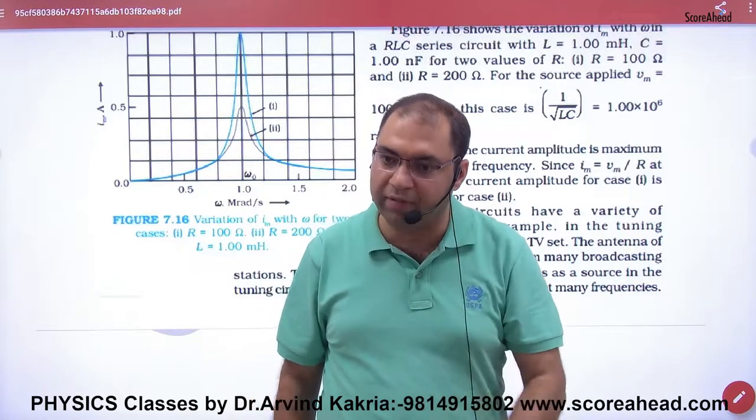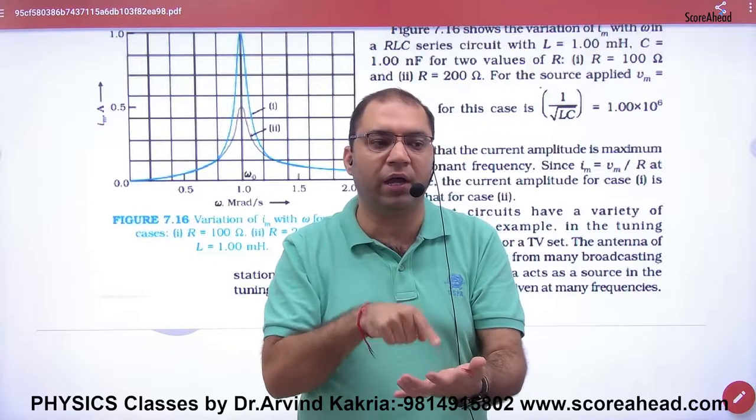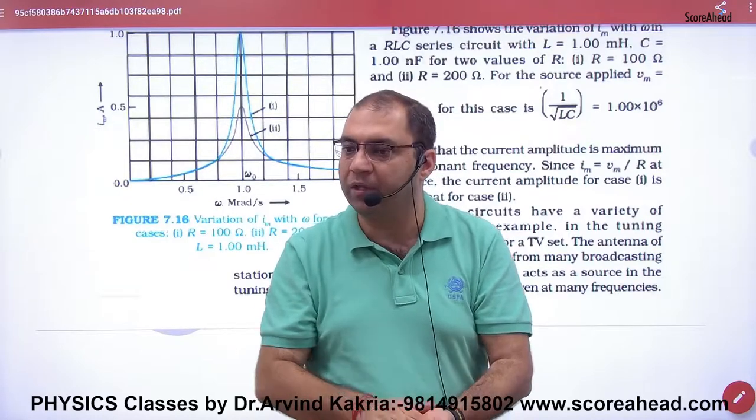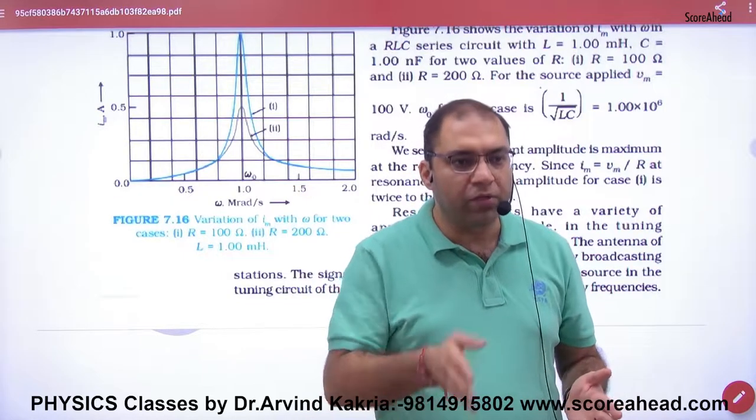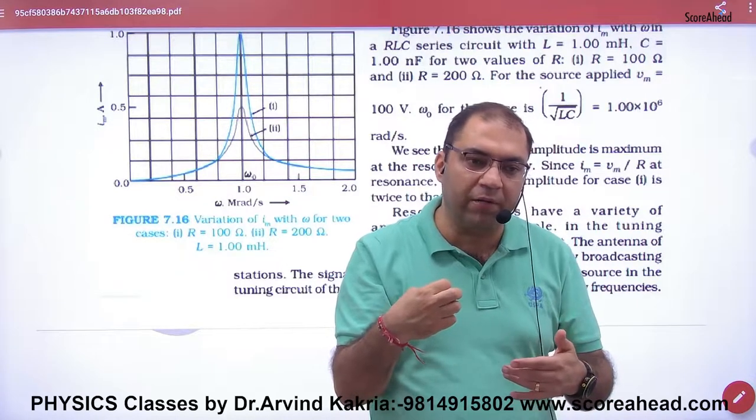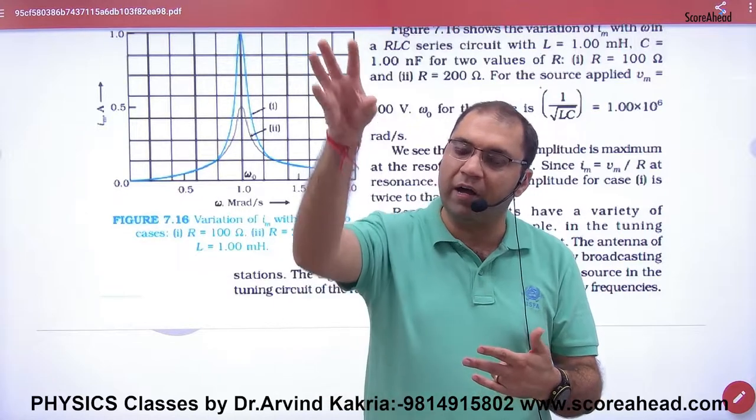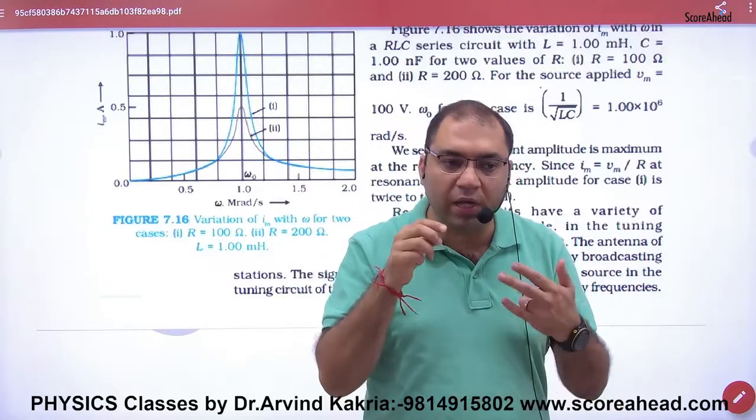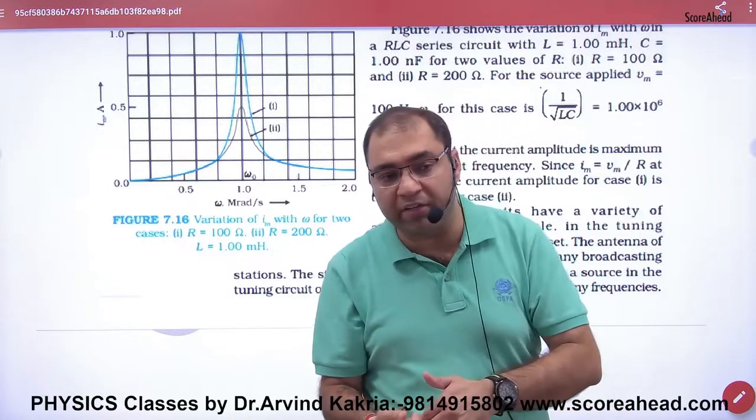How does the radio set do this? Using LCR resonance. When you set your radio to 92.7, the LCR circuit's resonance frequency becomes 92.7. Among the waves being broadcast, when you have hit the button for 92.7, that frequency's current in the radio set becomes maximum because you have set the resonance frequency to 92.7.